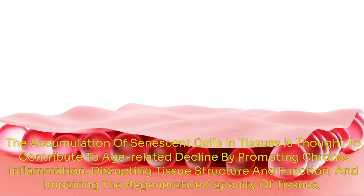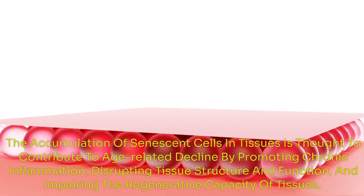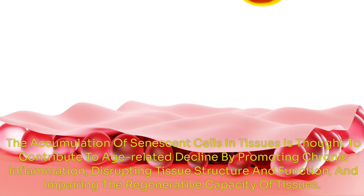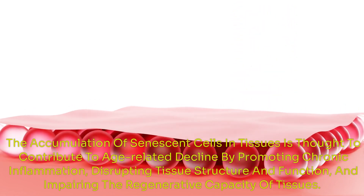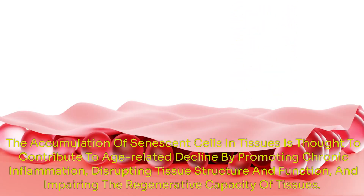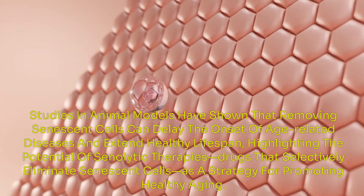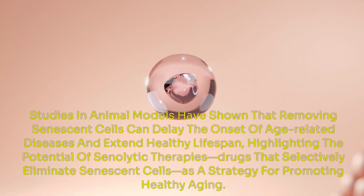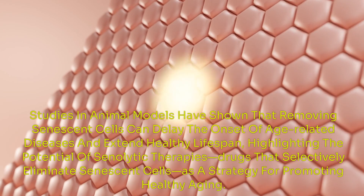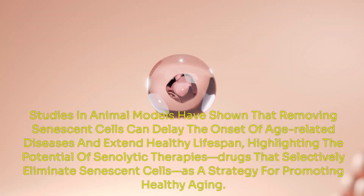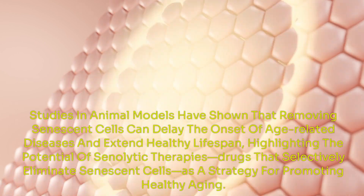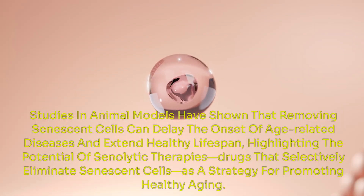The accumulation of senescent cells in tissues is thought to contribute to age-related decline by promoting chronic inflammation, disrupting tissue structure and function, and impairing the regenerative capacity of tissues. Studies in animal models have shown that removing senescent cells can delay the onset of age-related diseases and extend healthy lifespan, highlighting the potential of senolytic therapies — drugs that selectively eliminate senescent cells — as a strategy for promoting healthy aging.